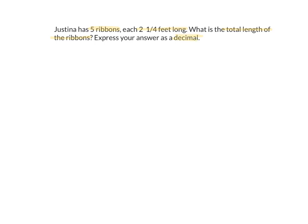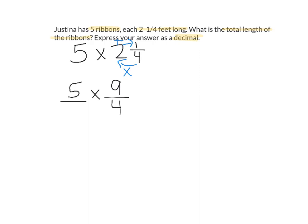We're going to highlight 'decimal' so we remember to do that at the end. Breaking apart what we know: she has five ribbons and each one is two and one-fourth feet long. To figure out the total length, we need to multiply five times two and one-fourth. We change our mixed number into an improper fraction: 4 times 2 is 8, add 1 is 9. So two and one-fourth becomes nine-fourths, and five becomes five over one.